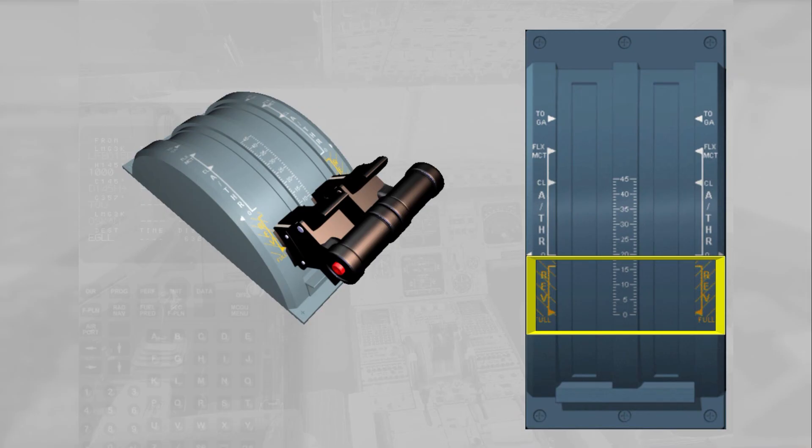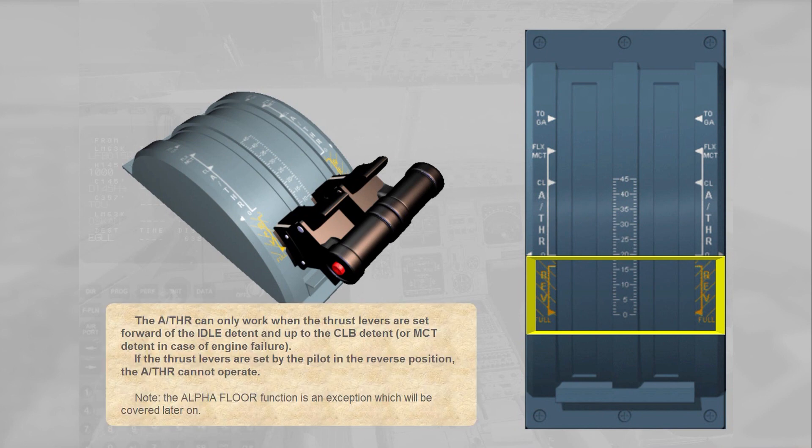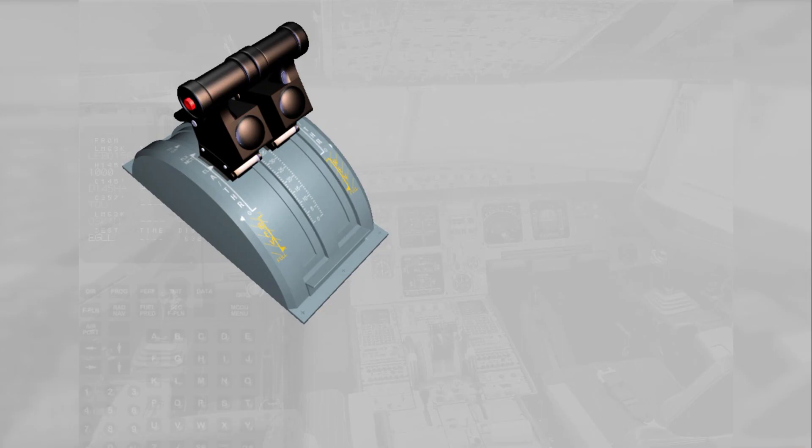The autothrust can only work when the thrust levers are set forward of the idle detent and up to the climb detent, or MCT detent in case of engine failure. If the thrust levers are set by the pilot in the reverse position, the autothrust cannot operate. Note: the alpha floor function is an exception, which will be covered later on. When autothrust is on, the thrust lever position determines the maximum thrust which can be commanded by the autothrust, for example to accelerate in speed mode.